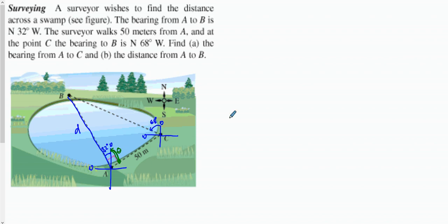In order to do part A, we know that this is a 90-degree angle. Since this is 32 degrees, this angle from here to here is 90 degrees, so the remaining angle is going to be 90 minus 32.